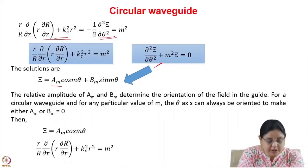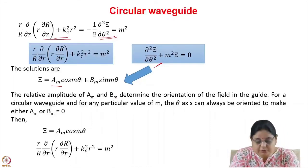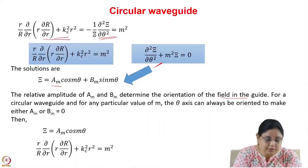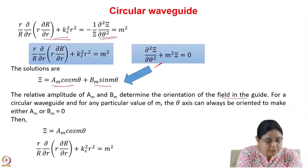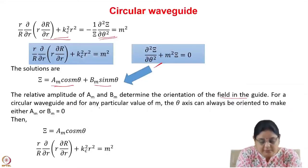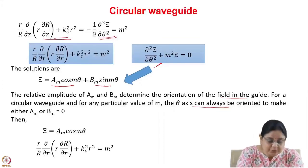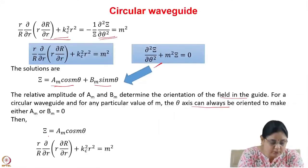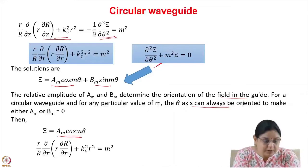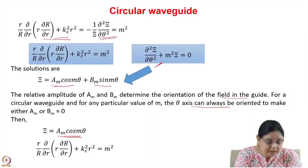The relative amplitude of Am and Bm determines the orientation of the field in the guide. For a circular waveguide, for any particular value of m, the theta axis can always be oriented such that one component goes to 0. We orient the axis so that Bm equals 0, leaving Theta equal to Am cos(m theta).